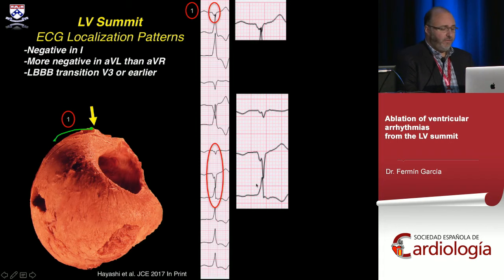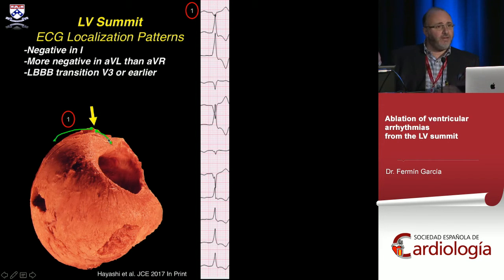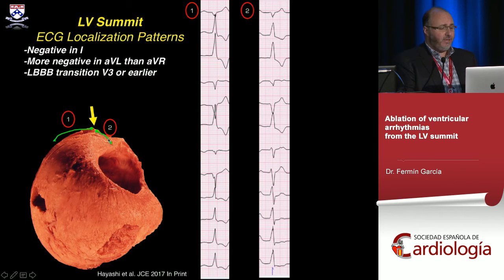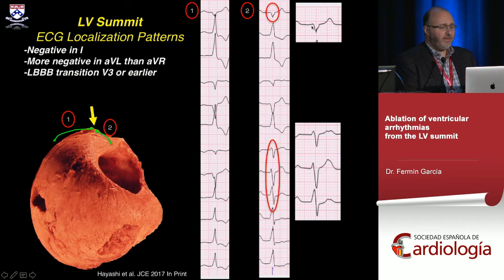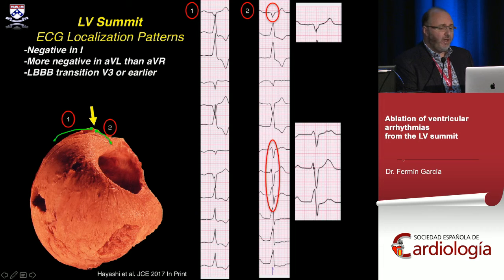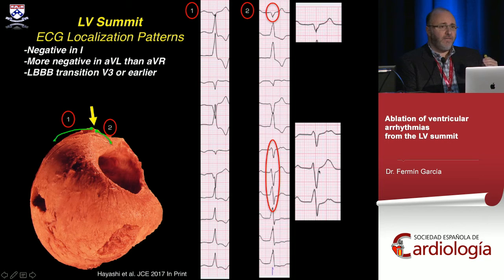Transition before V4, specifically at V3, is important to recognize. This is very different from something at or near the LV summit proper, which has a more negative component in lead I, more AVL than AVR, but now shows an R wave in lead I, V1, and V2 — transitioning in V3. We call this a pattern break: the R wave in V2 is bigger than in V1, and the S wave is deeper, suggesting something right in front of V2 on the chest, but not epicardial.